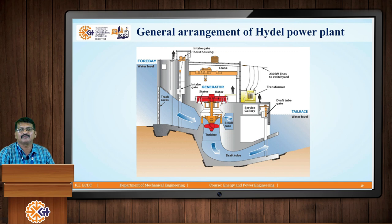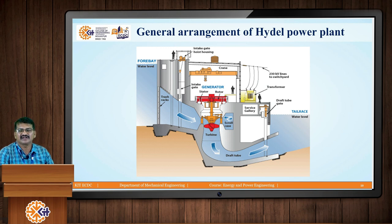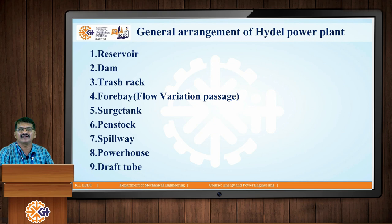This is the general diagram of any hydroelectric power plant. You can see the main dam, the water coming over the turbine, and the generator above it — generally it is below ground, as in the Koyna Dam. The draft tube is also shown, and the second reservoir is shown as well. This is the general arrangement of any hydroelectric power plant.